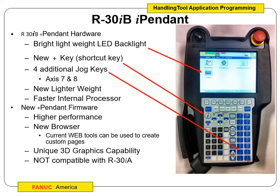This is the R30iB iPendant. They're both iPendants — this is the beefed-up one with better background lighting, different shortcut keys, and additional jogging keys for two more axes — seven and eight. It's lightweight, and when you guys start playing with these pendants, you'll understand what I mean by weight. It has 3D graphics capability. The only downfall is the two controllers are not compatible — if you've got the R30iA, it's not compatible with the R30iB stuff. We shouldn't have any issues in our classroom.